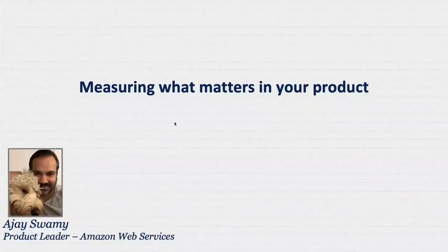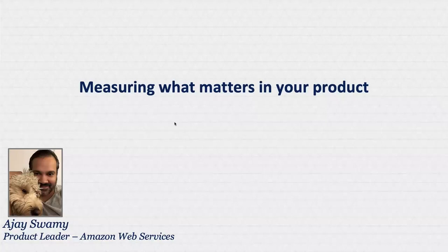Hello, everybody. Thank you for joining me today. My name is Ajay Swamy, and I am a product leader with Amazon Web Services. At AWS specifically, I am part of the AWS Solutions Group, where I manage various solutions and products that we build towards our customer segments. Within our worldwide customer segments team, my focus is on small and medium businesses, greenfield enterprises, DNBs, ISVs, digital native businesses, independent software vendors, and startups. So I build and deliver various products and solutions for all of these segments across the world.